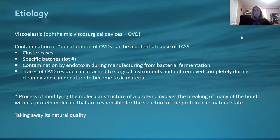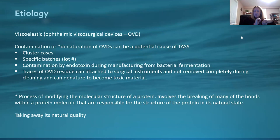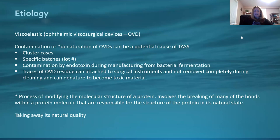Viscoelastic — your ophthalmic viscosurgical devices, your OVDs. Contamination or denaturation — the process of modifying the molecular structure of a protein, involving the breaking of bonds within the protein molecule responsible for its structure in its natural state — basically means you're taking away its natural quality. Contamination of the viscoelastic can certainly be a potential cause of TASS, and it can often cause clusters of cases. This is where you're going to look at your specific batches, go back to lot numbers, and see if there is a correlation.